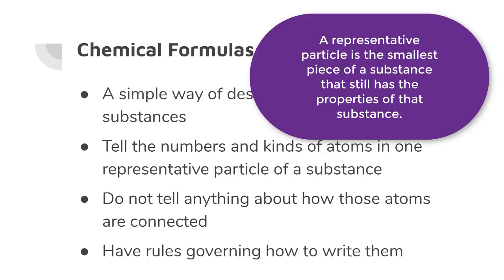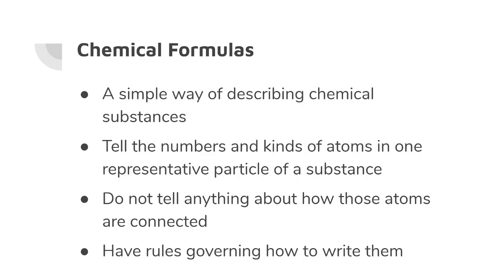An atom is a representative particle of an element. It's the smallest piece of the element that still has its properties. A molecule is a representative particle for a particular type of compound. So if you're looking at a chemical formula, it's going to tell you what kinds of atoms are in there and also how many of each of those are in the particle.